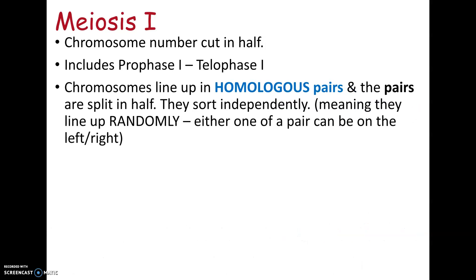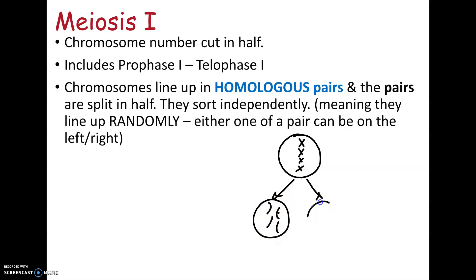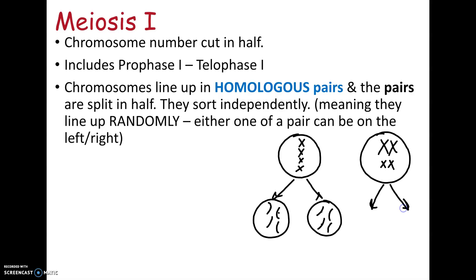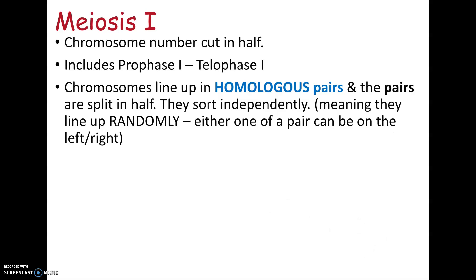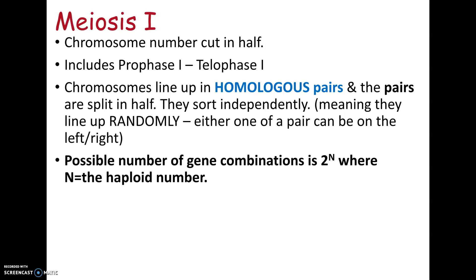Meiosis I is what actually cuts the chromosome number in half. It has prophase I, metaphase I, anaphase I, and so on. The key difference from mitosis: in mitosis, four chromosomes would line up individually in a straight line and the X-shapes would split in half. In meiosis I, chromosomes line up side by side with their homologous partner. At the end of meiosis I, each of the two resulting cells has only two chromosomes instead of four — the chromosome number has been cut in half.